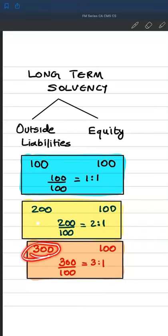Look at scenario three where the outside liabilities are 300, equity is 100. So 300 by 100, the ratio is 3 is to 1. It means for 1 rupee of equity there is a debt of 3 rupees. So three-fourths is the debt. So debt is 75% and equity is one-fourth, which is 25%. So from 50%, equity has gone down to 25%, and debt from 50% has increased to 75%.